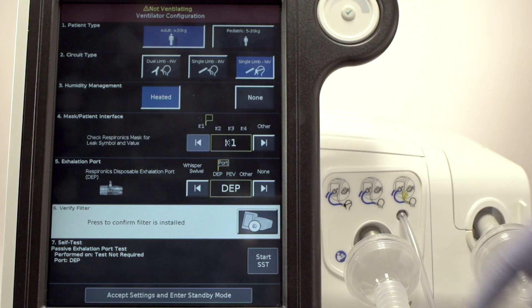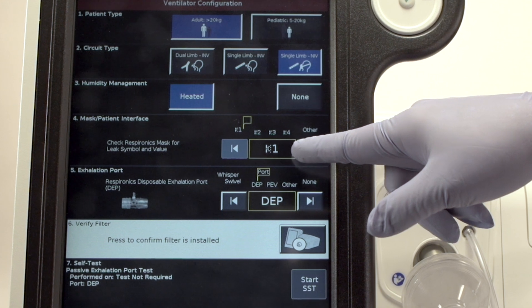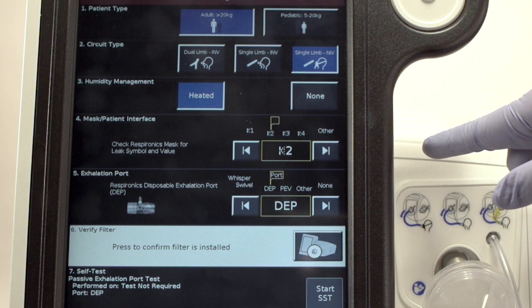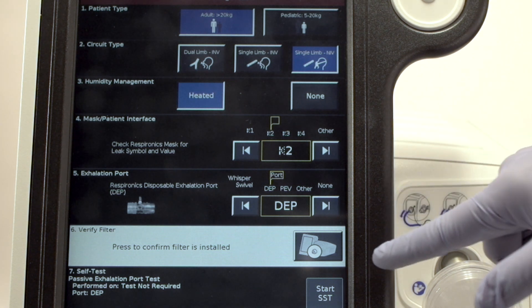Next, select the Leak symbol that corresponds to your Philips Respironics mask. If you are using another manufacturer's mask, enter Other. Next, select the Exhalation port.